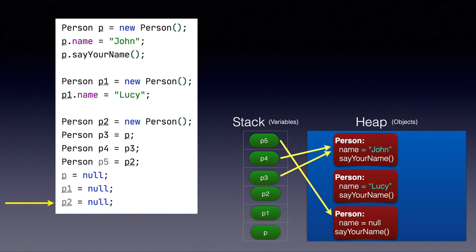Let's say we say p3.name equals John Doe. When we try to access the name using p4, p4 will actually see the name as John Doe, because both variables are actually pointing to the same object.